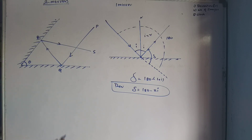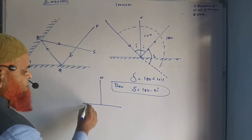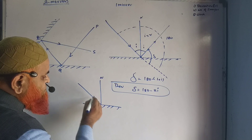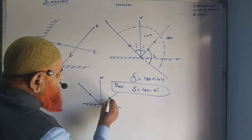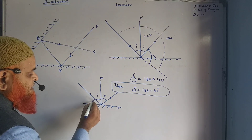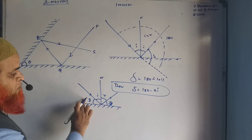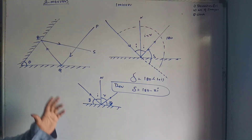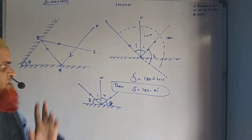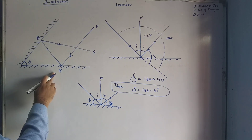As discussed previously, if this is the normal and this is the incident light ray reflecting back, the angle of incidence and angle of reflection give us glancing angles. Both glancing angles are equal. This was already covered in the first class — both glancing angles will be the same.